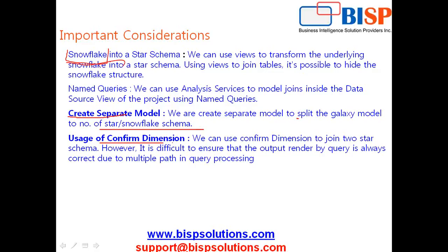Before you start building your Microsoft SSAS cube, you should have a list of dimensions, attributes, hierarchies, and their respective properties. Another important concept is the junk dimension — a simple structure that provides a convenient place to store junk attributes and codes. It is a collection of random transaction codes. For example, when designing a sales order processing solution, one of my dimensions is product, which has product color, product material, and product size as additional information. I club them together to form the junk dimension.